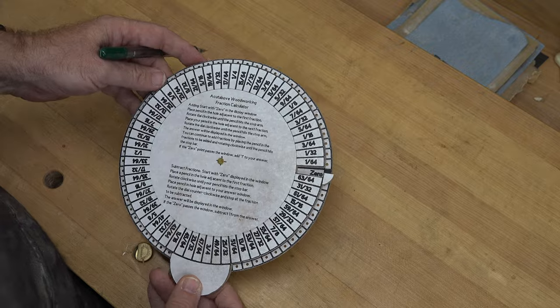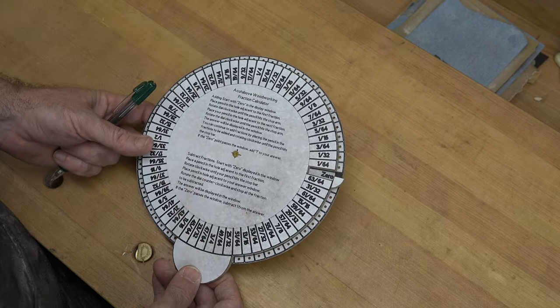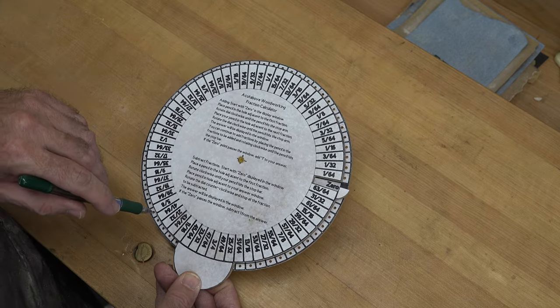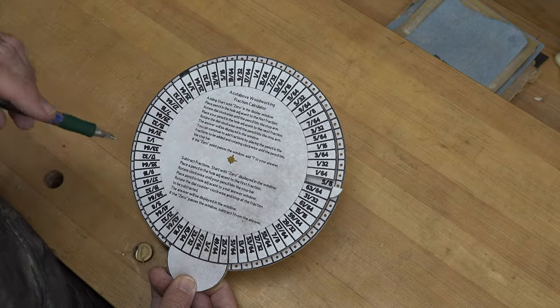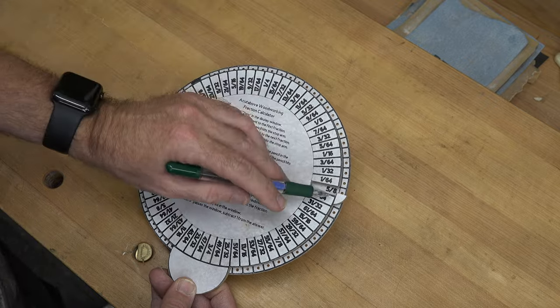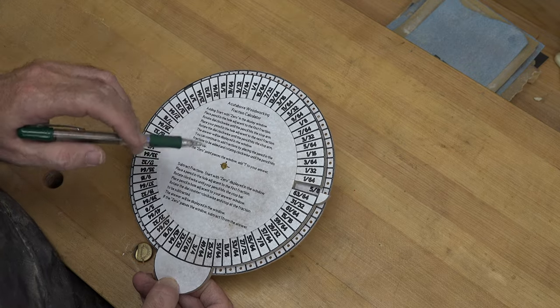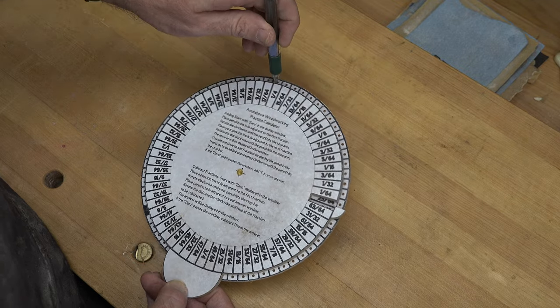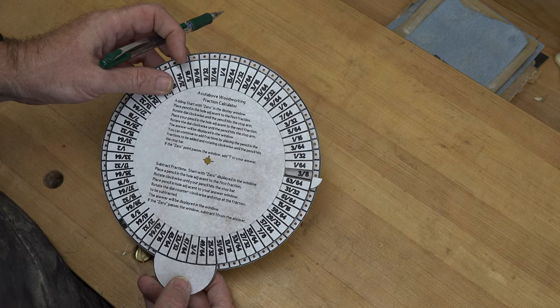So how about subtracting fractions? Well again, you have to reset this thing to 0. Let's say that we want to take away 5/8ths minus 1/4. So you want to set it so that your 5/8ths is in the window. And then what you want to do now is starting from your 0 point where you just had this, move it counterclockwise and stop it at the fraction that you want to subtract. So I said 5/8ths minus 1/4. So we'll take the 5/8ths, spin it counterclockwise and stop it at 1/4. And there is our answer there in the window at 3/8ths.